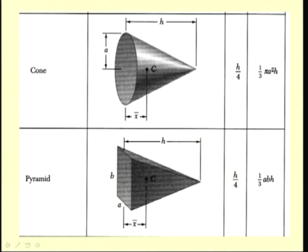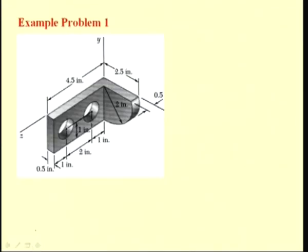In the case of the cone, we have symmetry, so the centroid lies along the axis at a distance of h/4 from the base of the cone. For the pyramid, we have the centroid located at h/4 from its base. Here we have an example where we find the centroid of a complex shape by decomposing it into simpler shapes. For these simpler shapes, we know the location of the centroid, and thus we can find the centroid of the complex object.